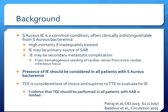Staph aureus bacteremia is the most common cause of infective endocarditis. Five to 15% of patients with staph aureus bacteremia have or will develop infective endocarditis. The mortality in staph aureus-associated infective endocarditis is even higher, ranging between 19% to 65%. Infective endocarditis may be the primary source of staph aureus bacteremia, or it may develop as a secondary metastatic complication from hematogenous seeding of cardiac valves from extracardiac infectious sources.